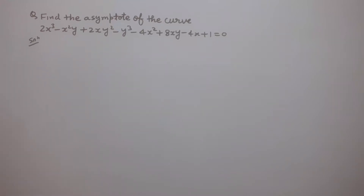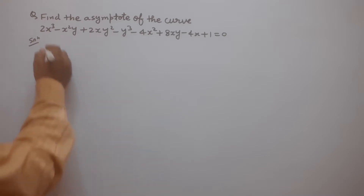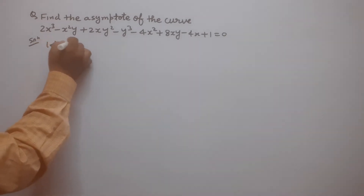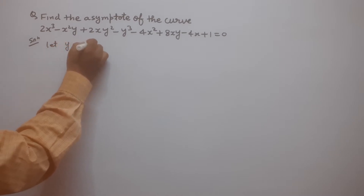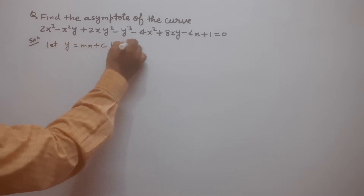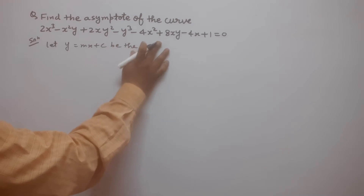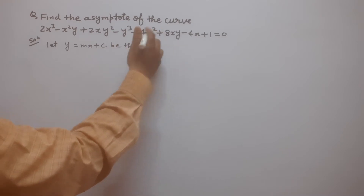In this question, we have to find the asymptote of the given curve: 2x³ - x²y + 2xy² - y³ - 4x² + 8xy - 4x + 1 = 0. Here the given curve is an algebraic curve. So first, let y = mx + c be the asymptote of the given curve.